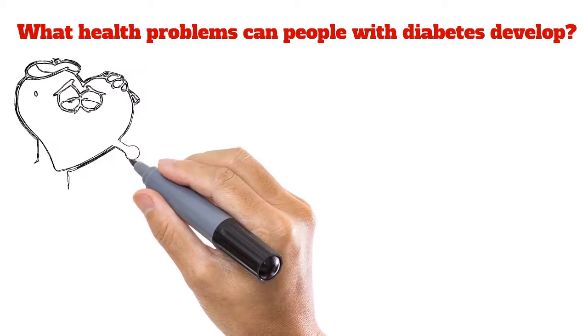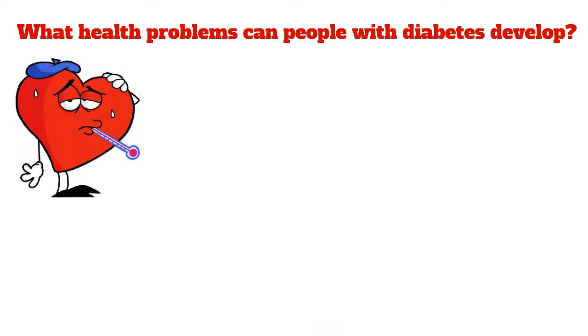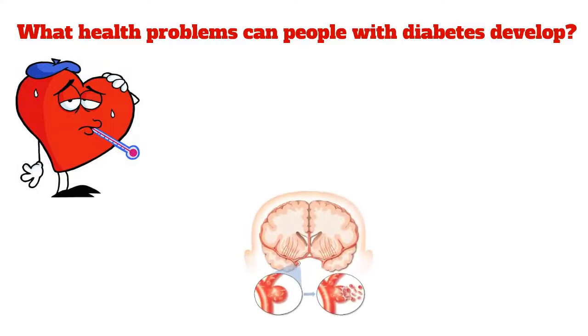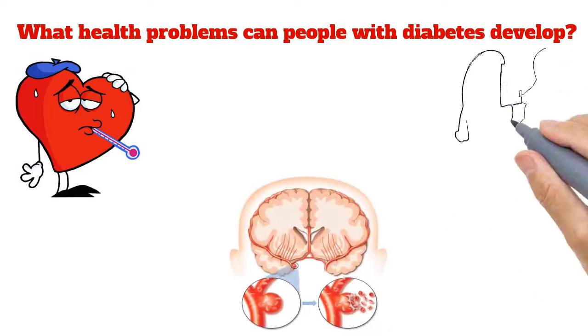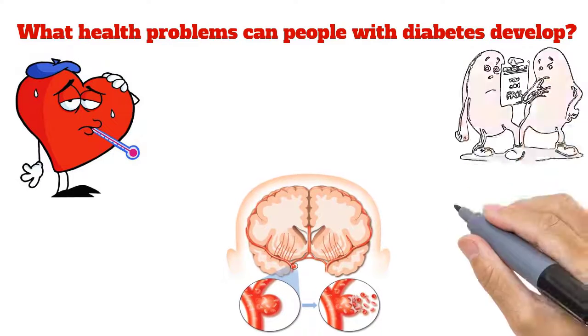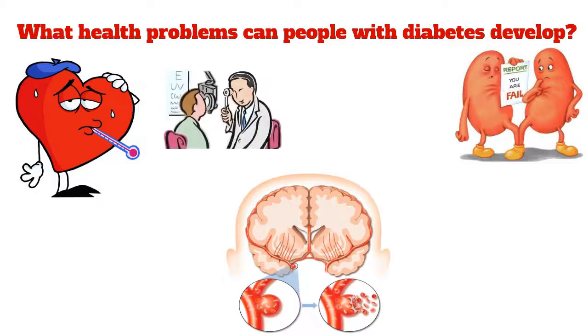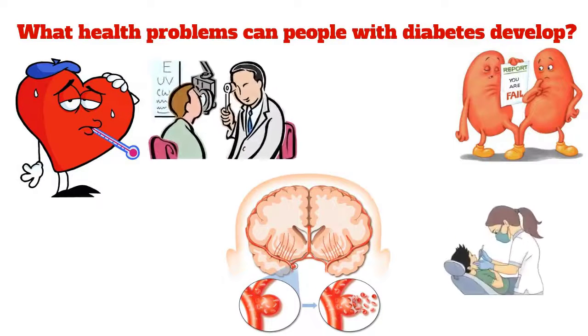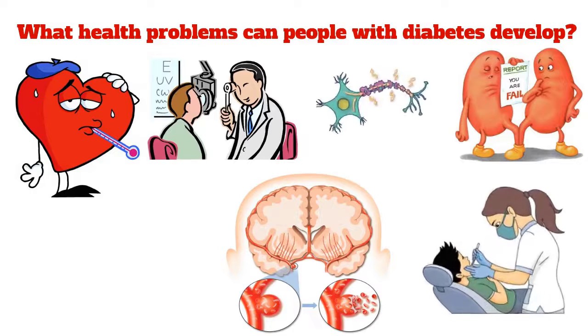What health problems can people with diabetes develop over time? Higher blood glucose leads to problems such as heart disease, stroke, kidney disease, eye problems, dental disease, nerve damage, and foot problems.